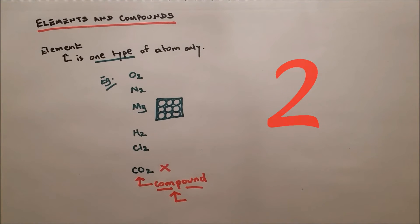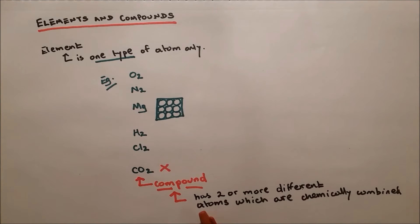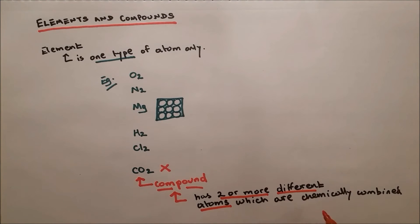Now what is a compound? A compound has two or more different atoms which are chemically combined. We have two or more different atoms, that's very important, and they're chemically combined. Chemically combined means they are bonded. There's a chemical bond. It could be ionic bond or covalent bond depending on the compound.